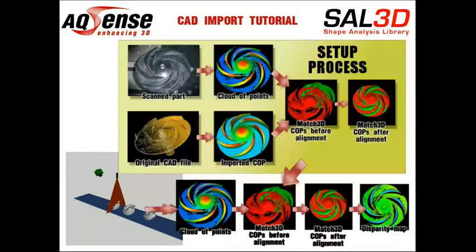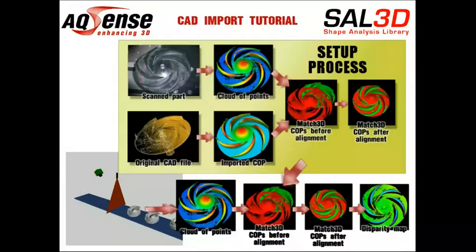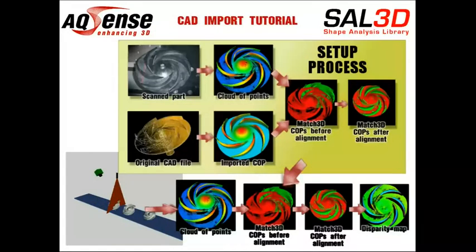Then we will scan that object on the conveyor belt, using a triangulation system calibrated with the SAW3D metric tool. We will show how SAW3D can quickly align any scanned cloud of points of those objects with the ideal surface coming from CAD, and show the disparity map image.